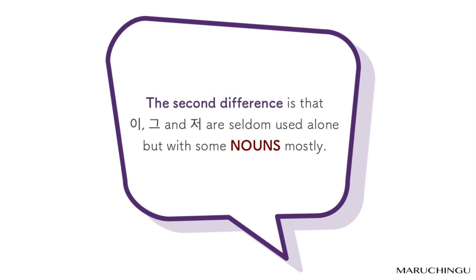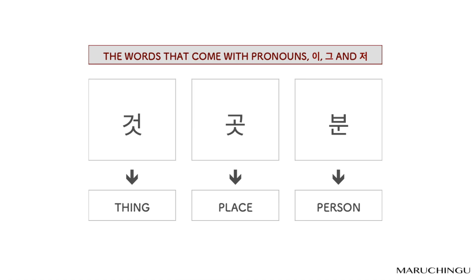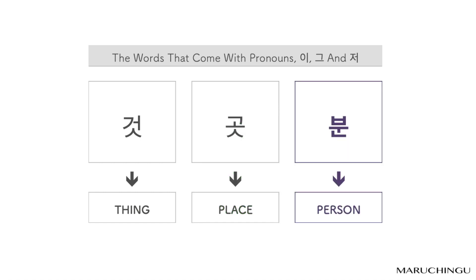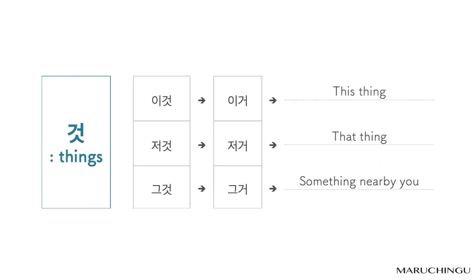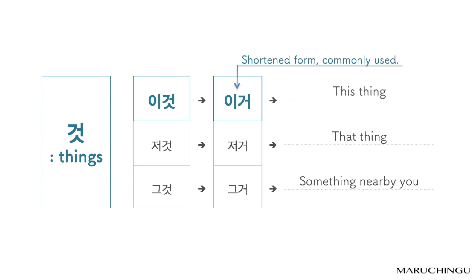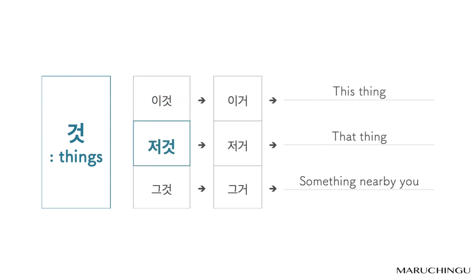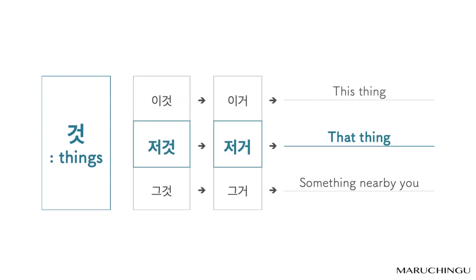The second difference is that 이, 그, and 저 are seldom used alone but with some nouns. The words that commonly come with these pronouns: 것 (describing things), 곳 (describing place), 분 (describing person). Short forms: 이것/이거 means 'this thing,' 저것/저거 means 'that thing (far from both).'